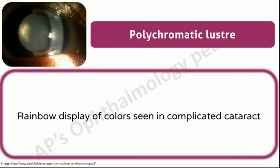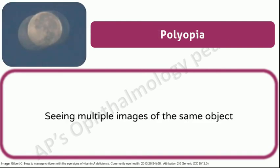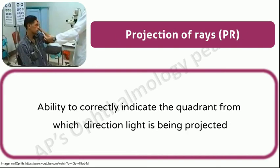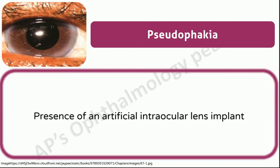Polychromatic luster: rainbow display of color seen in complicated cataract. Polyopia: seeing multiple images of the same object. Uniocular polyopia is seen in the incipient stage of a cortical cataract. Primary IOL implantation: IOL implantation immediately after surgically removing the crystalline lens. Projection of rays: ability to correctly indicate the quadrant from which direction light is being projected. PR should be checked whenever the vision is either hand movements or perception of light. Pseudophakia: presence of an artificial intraocular lens implant. A person having an IOL in the eye is referred to as a pseudophake.